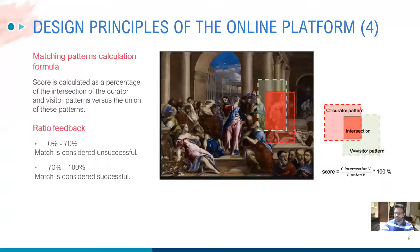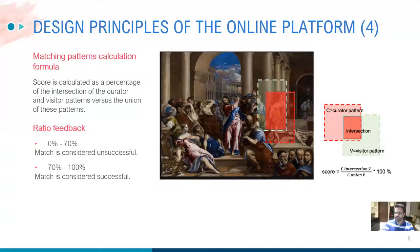The calculation of the score and ultimately the success or failure of the match is based on the algorithm shown in the screenshot. The score is calculated as a percentage of intersection of the curator and the visitor pattern versus the union of these patterns. This ratio takes values between 0% (no intersection) and 100% (full match). If a selection has to be performed in both the primary and secondary image, then the score is the average of the two scores. Finally, if the score is above a threshold of 70%, the match is considered successful; otherwise it is a failure.